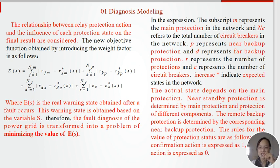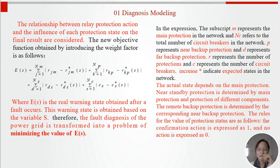In this expression, M is the main protection and C represents circuit breakers. P is the near backup protection and D is far backup protection. R represents the number of protections and C represents the number of circuit breakers. The next step indicates expected states in the network. The actual state depends on the main protection and nearby protections. Near standby protection is determined by main protection and protection of different components. The remote backup protection is determined by the corresponding near backup protection. The rules for the value of protection status are as follows: confirmation action is expressed as 1 and no action is expressed as 0.